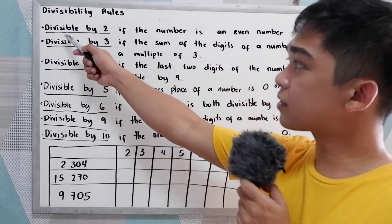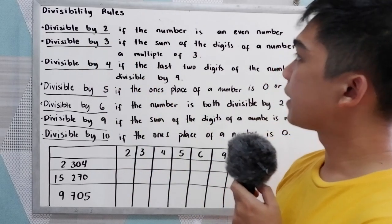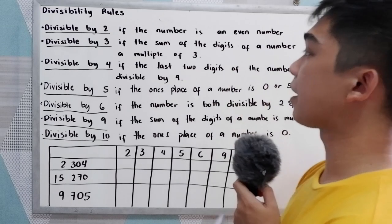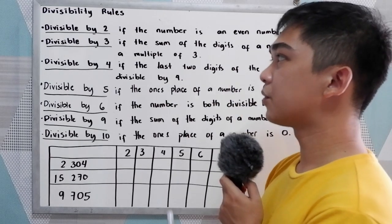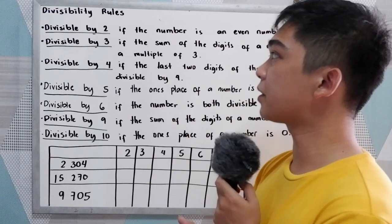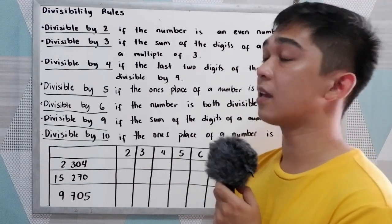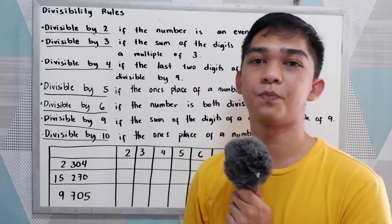Let's start with divisible by 2. If the number is an even number, then it is divisible by 2.